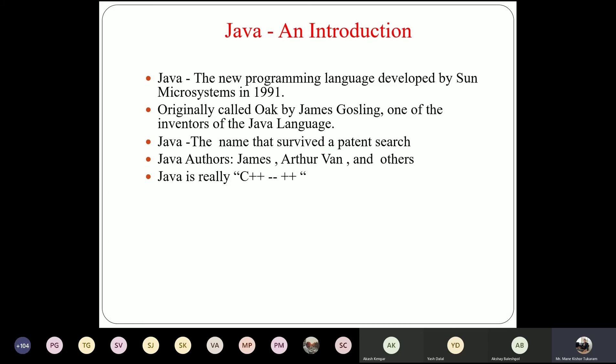Why was Java evolved? Initially, Java was designed and developed by Sun Microsystems in the year 1991, and it was initially called OAK. Later it was renamed Java. It is very similar to C++, which is why it is sometimes called C++++. Whatever contents were included in C++ were carried forward into Java, but with different additional facilities.